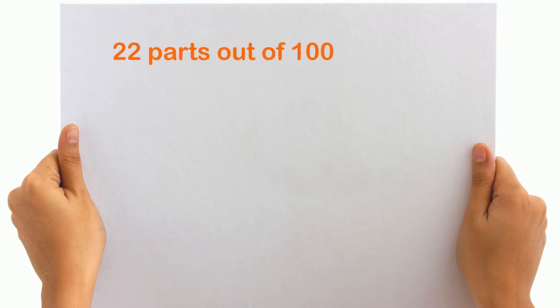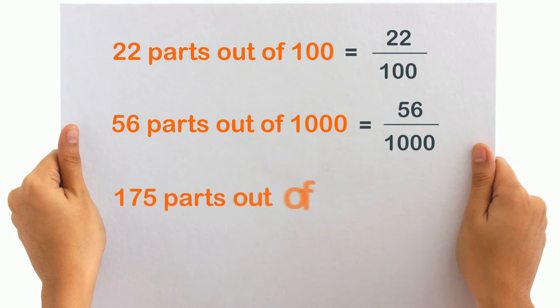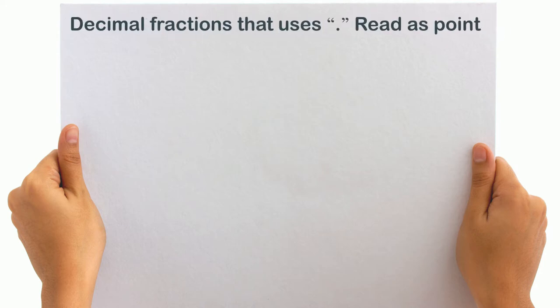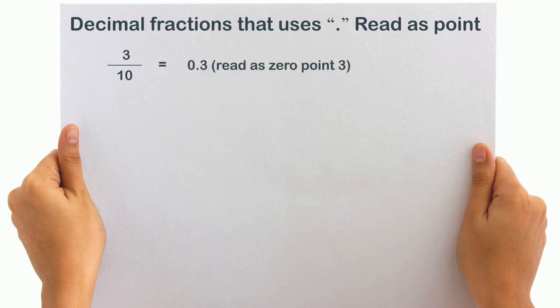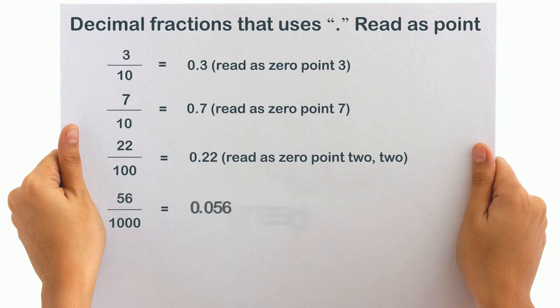Similarly, twenty-two parts out of hundred will be twenty-two by hundred, fifty-six parts out of thousand will be fifty-six by thousand, and one seventy-five parts out of one thousand will be one seventy-five by one thousand. All four of these are decimal fractions. Now there is another way of writing these decimal fractions using a point. By this method we can write: three by ten is equal to 0.3, seven by ten is equal to 0.7, twenty-two by hundred is equal to 0.22, fifty-six by thousand is equal to 0.056.